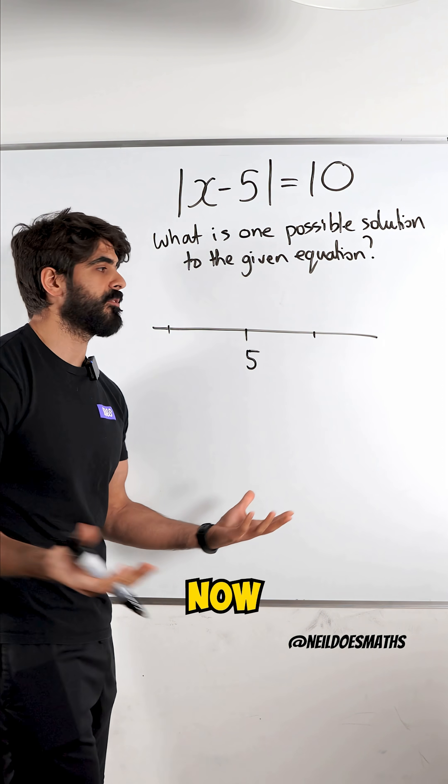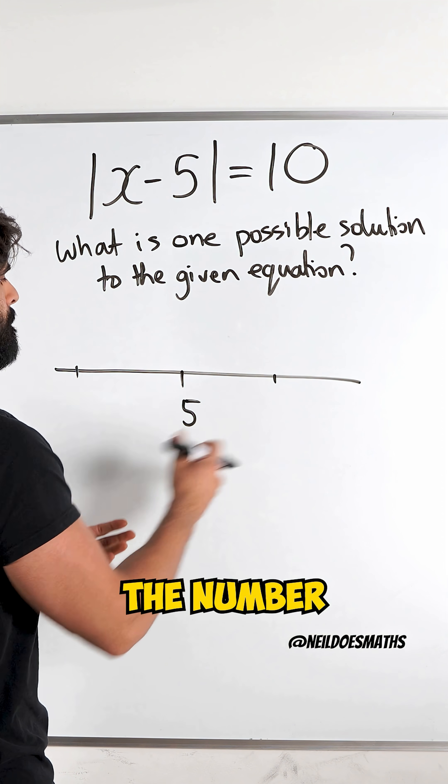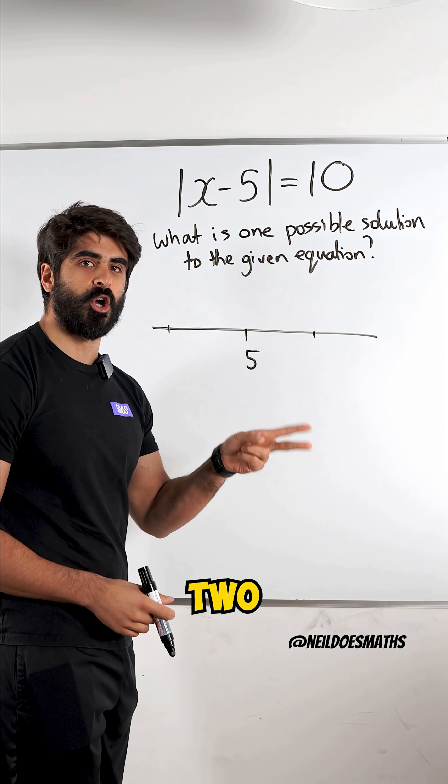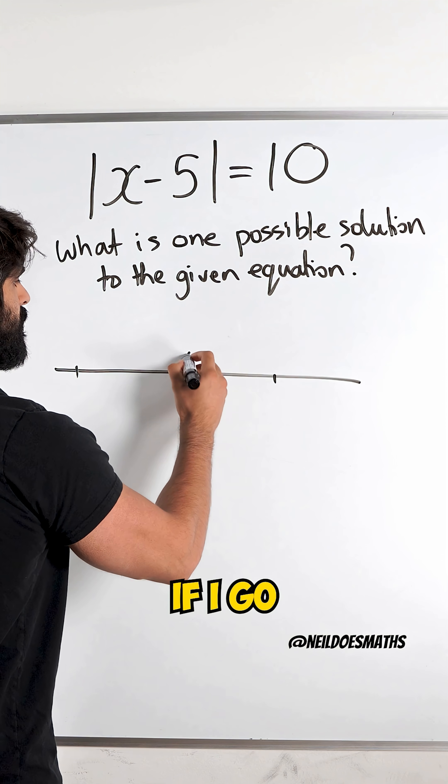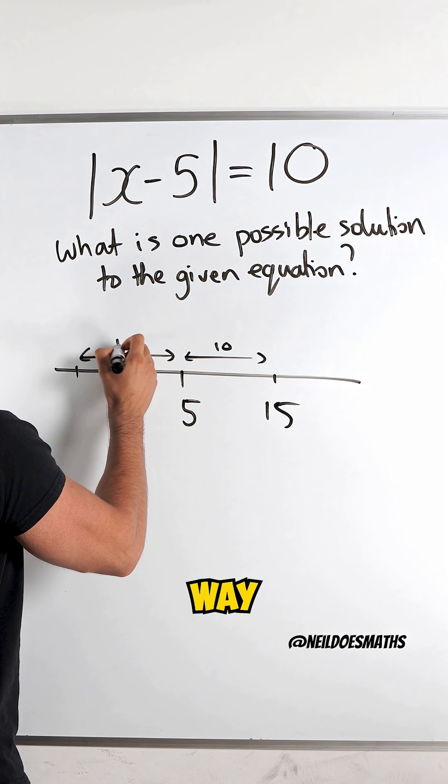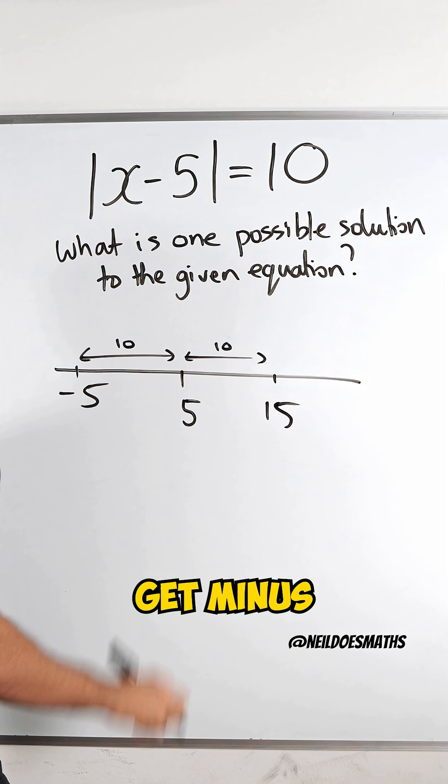So what I'm basically doing now is writing down the number which is 10 away from 5. Now the question says 1 possible, but there's actually 2 possible answers. So if I go 10 away from 5, I have 15. And when I go the other way, I get minus 5.